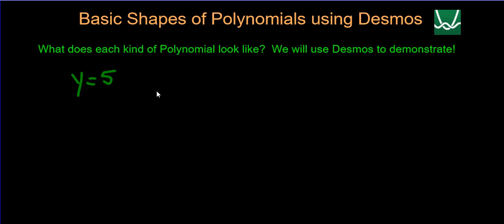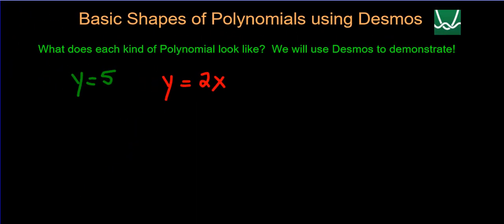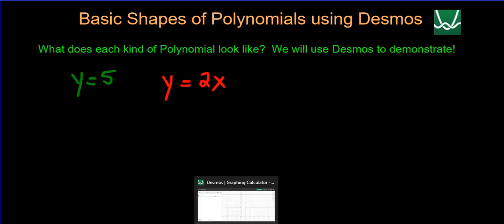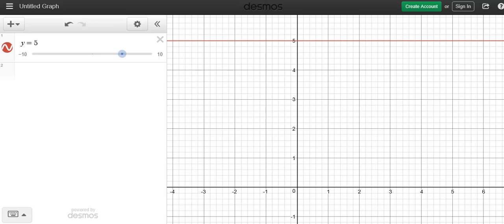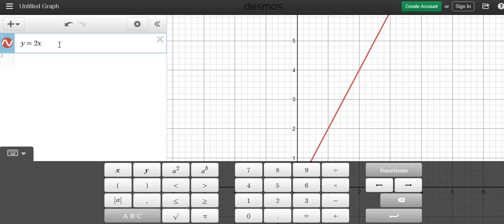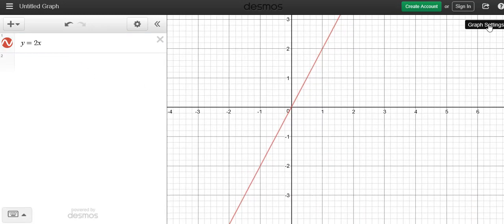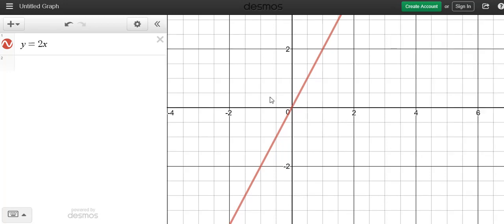Later on, you learned in school another type of graph. Instead of just y equals two, we're going to go two x. So y equals two x, let's go look at Desmos and let's type in y equals two x. So we get a graph that looks like this.